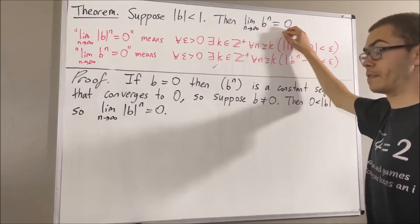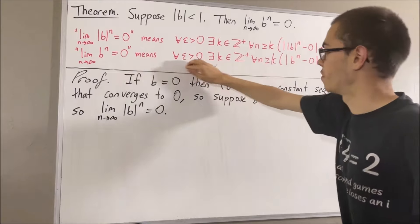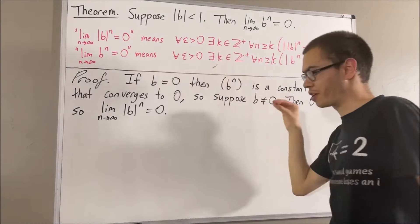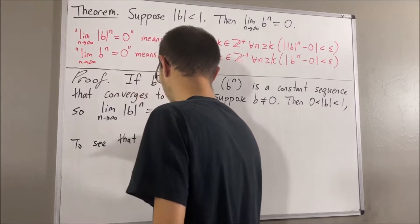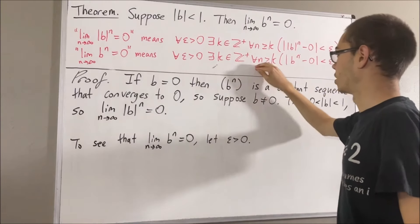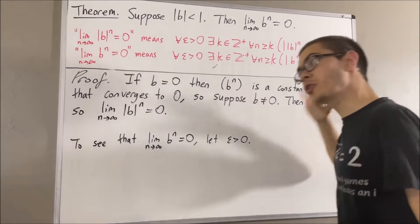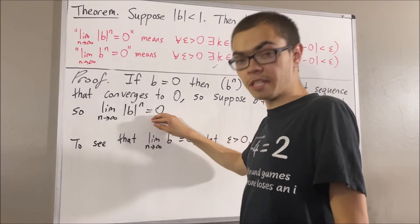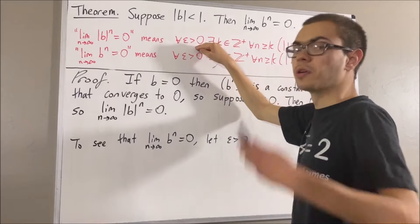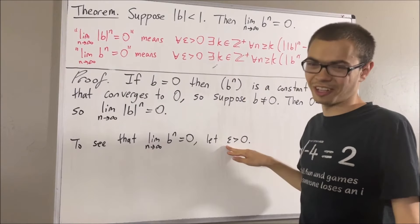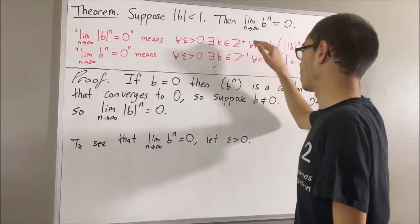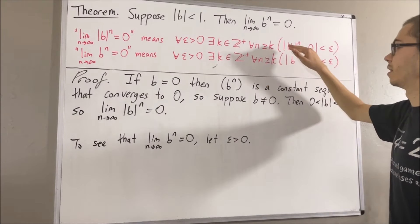Now, the whole goal is to prove this limit, which means we want to prove that this statement is true. Since we're trying to prove a statement about every epsilon greater than 0, let's give ourselves an arbitrary epsilon greater than 0. The whole goal is to find some positive integer k such that this is true. Since we know that the limit of the absolute value of b to the n is equal to 0, this statement is true for every positive real number, so in particular it must work for our epsilon. Taking epsilon to be the epsilon we have here, we have that there is some positive integer k such that for all positive integers n greater than or equal to k, this is true.